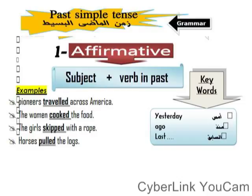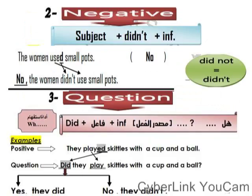These are the key time cues for the past simple. When I see words like 'last' — for example, last week, last month, last year — I know it's past simple. For the negative, it's: subject + didn't + verb in the infinitive. For example: 'He didn't play,' 'They didn't eat.' You cannot say 'they didn't ate' or 'they didn't played' — no, because after 'didn't', the verb must be in the infinitive form. Similarly, for questions we use 'did' + subject + verb in the infinitive.